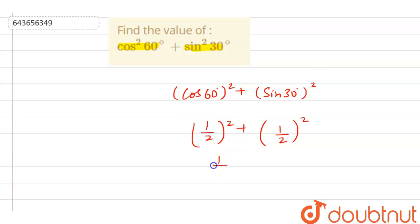And we know that 1 by 2 whole square is 1 by 4, and here 1 by 2 whole square is also 1 by 4.